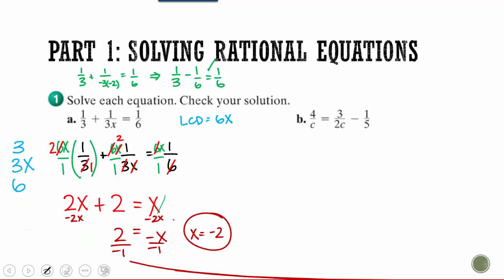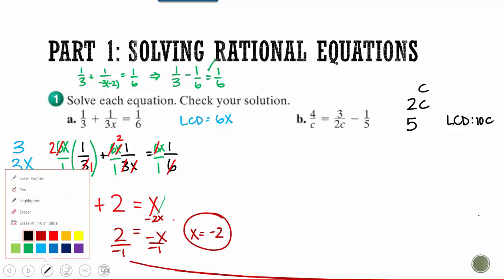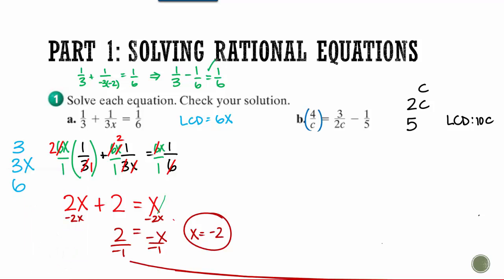So let's try this next one. Find your LCD. So look at your denominators. We got C, 2C, and 5. So let's just look at our numbers first. What's the smallest number that 2 and 5 fit into? Hopefully you said 10. And then we only have a C for both of these. So it's got to have a C in it. So then what I'm going to do is I'm going to go through and each one of these guys, I'm going to multiply by 10C. Every single one of them.